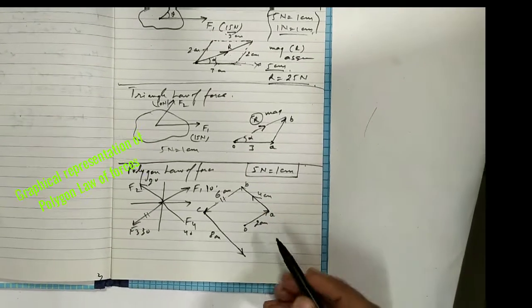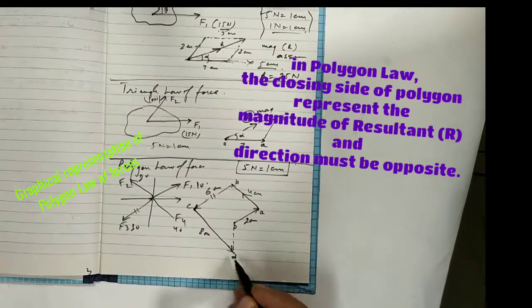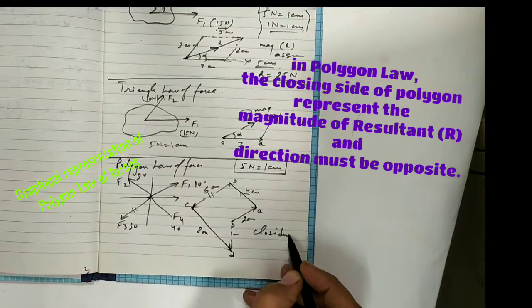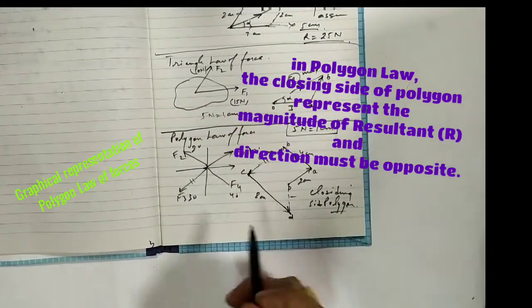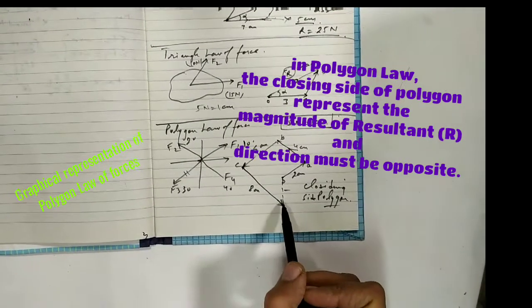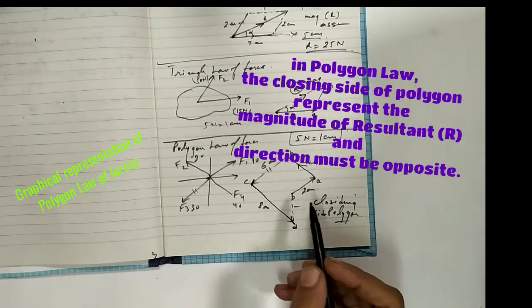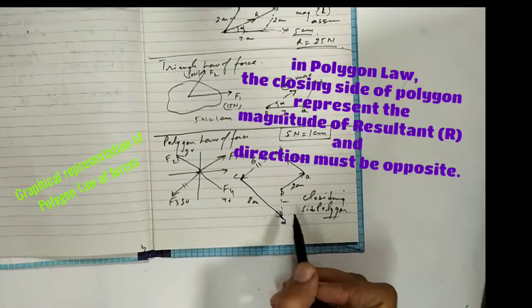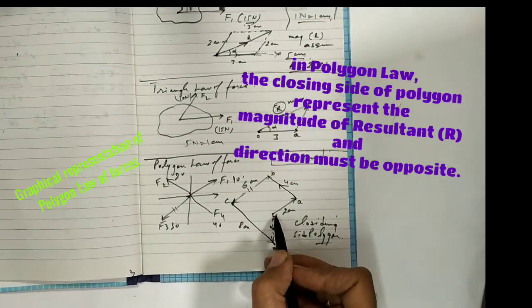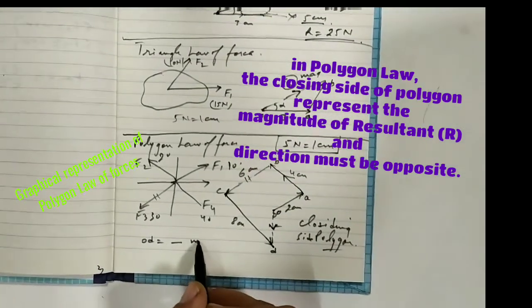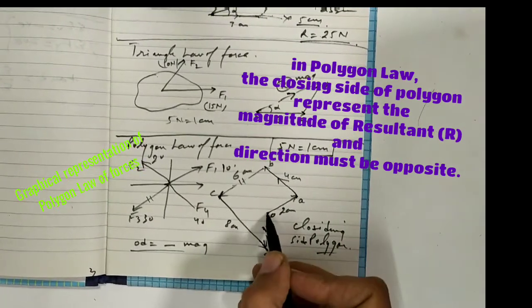After drawing the vector diagram, the closing side of the polygon is OD. By definition of the polygon law, the closing side OD represents the resultant of the four forces. The direction is in the opposite order — meaning if the forces were drawn clockwise, the resultant OD is drawn anticlockwise. OD represents the magnitude and direction of the resultant force.